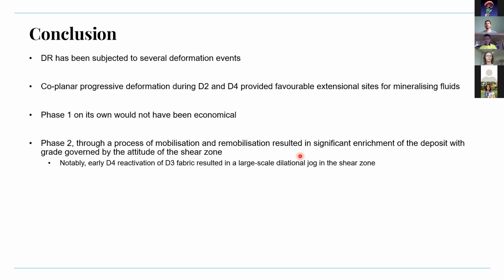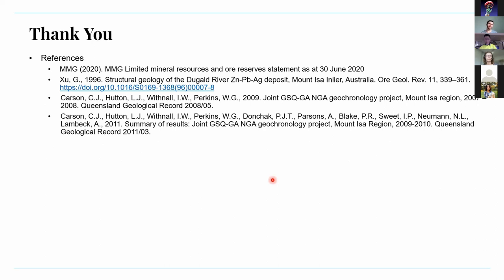In conclusion, Dougal River has been subjected to several deformation events. Coplanar progressive deformation during D2 and D4 provided favorable extensional sites for mineralizing fluids. Phase one on its own would not have been economical, and phase two through mobilization and remobilization resulted in significant enrichment of the deposit, with grades governed by the attitude of the shear zone. Notably, earlier D4 reactivation of D3 fabric resulted in a large-scale dilational jog in the shear zone.